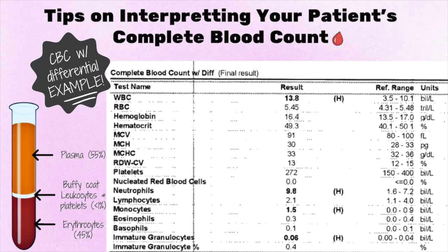Monocytes generally make up about 0 to 6% of white blood cells and are typically elevated in viral infections, similar to lymphocytes. Eosinophils make up about 0 to 3% of white blood cells, and an elevation often correlates with either an allergic reaction or infectious diseases — specifically parasitic infections such as scabies. Allergic disorders like asthma, atopic dermatitis, or medication reactions such as penicillin or cephalosporins can also elevate eosinophils. Basophils make up about 0 to 1% of white blood cells, and an elevation is also seen in allergic responses, similar to eosinophils.